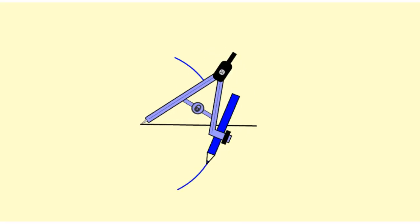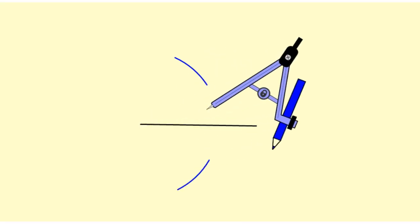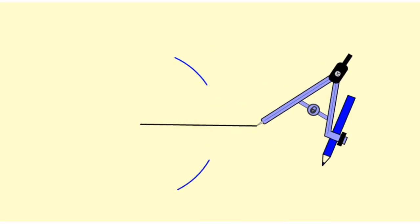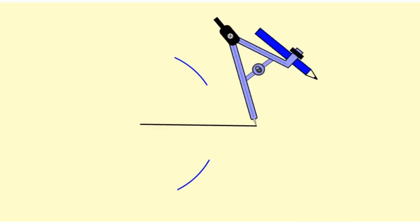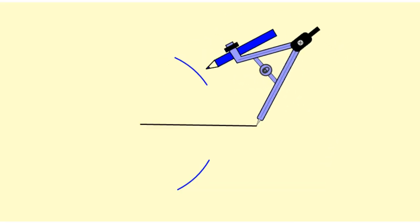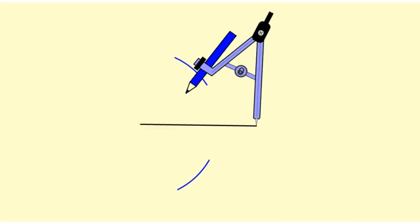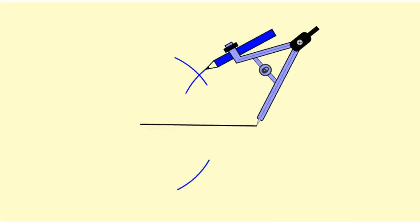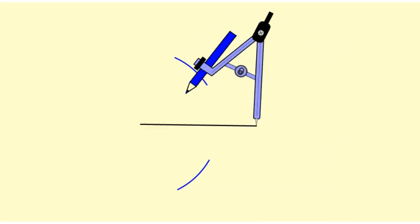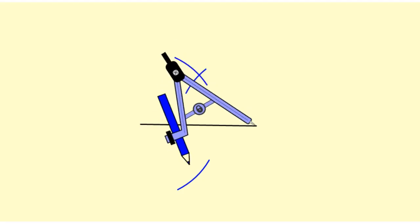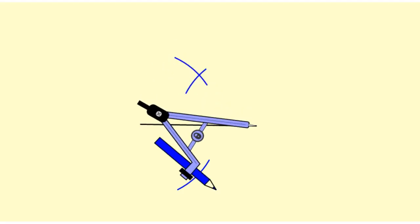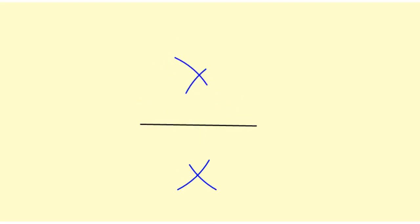I'm going to draw an arc below. Then I'll pick up the compass and move it over to the other point and do the same thing — don't change the compass setting. I'll draw an arc above, rotate it down, and draw an arc below.